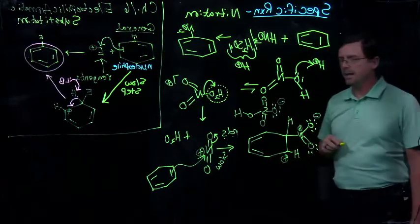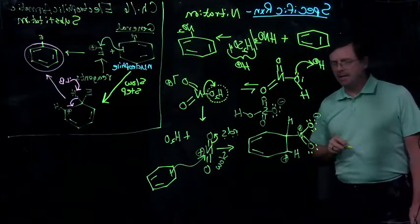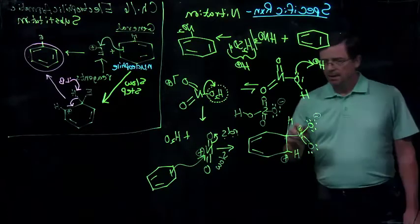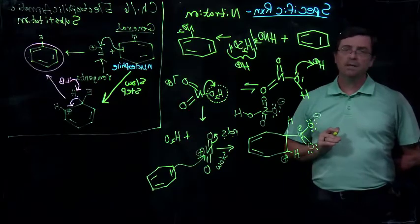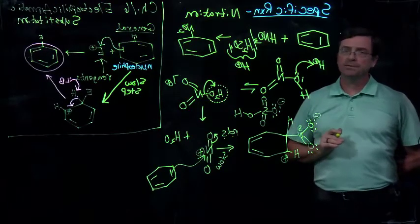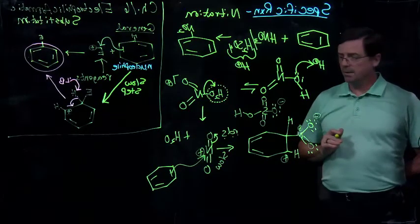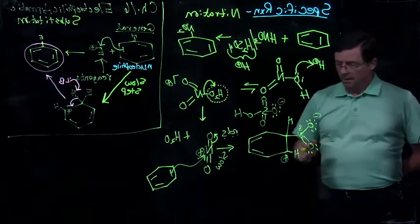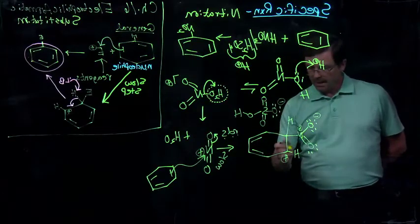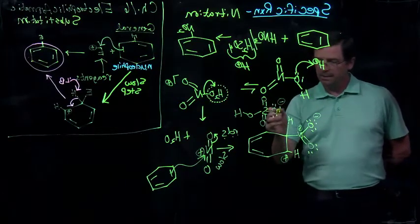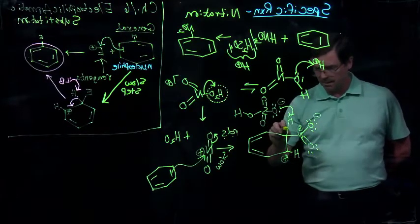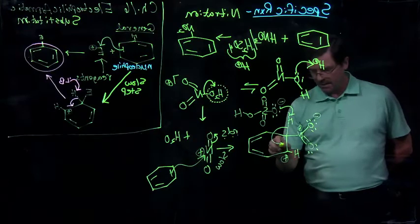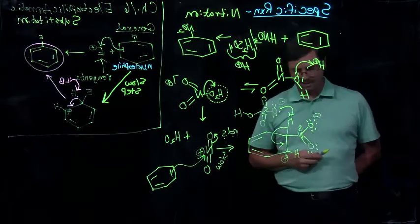Right? That's the bisulfate anion. And so what I want you to recognize is I said sulfuric acid is the boundary. It's the weakest of the super acids or the strongest of the strong acids. But our carbocation here is sufficiently acidic to give up a proton to bisulfate, which means that this is a super acid.